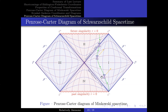Another interesting point is that region 1 and region 3 cannot communicate with each other. This is because on the Penrose-Carter diagrams, there is no causal curve connecting the two regions as they are space-like separated. The only way to connect these space-like separated regions is via a wormhole, which will be explored in greater detail in future lectures. I hope you have learned something from these lectures, and see you in the next video.